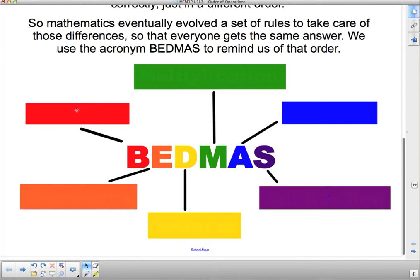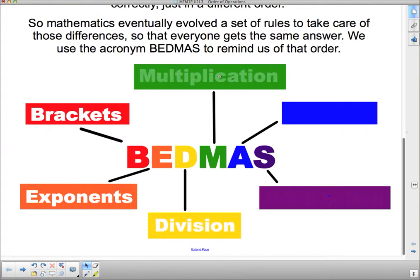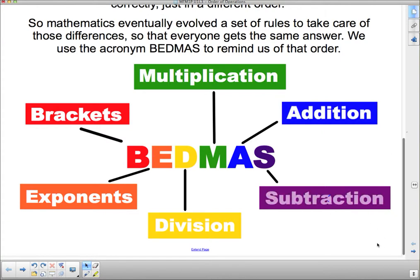BEDMAS stands for brackets. So if there are any brackets in the question, we start with the brackets. We do the operations within the brackets. And when we're inside a bracket, the rest of the orders follow as well. E comes next. Brackets. Exponents. Exponents are our next order of operation. Then division. Then multiplication. Then addition. And then subtraction.